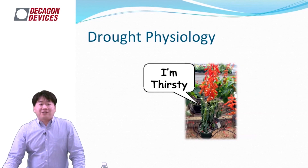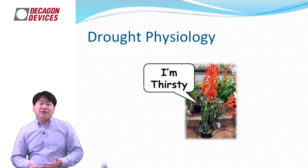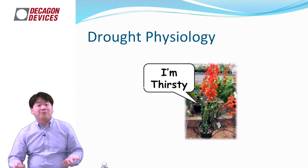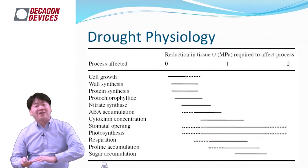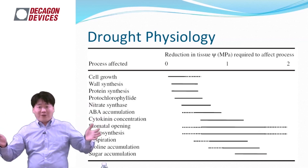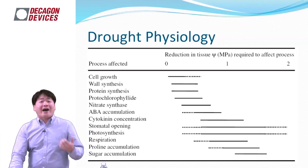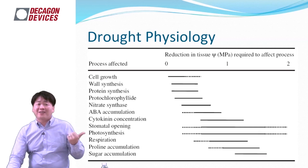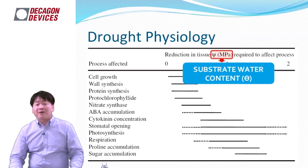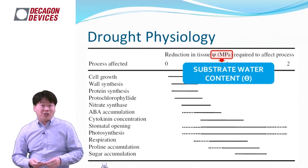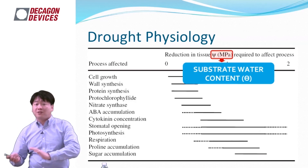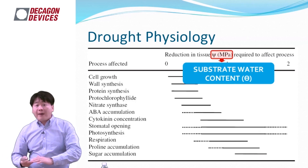For the drought study, plants feel thirsty whenever they have less water in the substrate. Many studies have been done on drought physiology, and this graph shows a good overview of it. The problem I had was that most work is based on water potential, which is hard to measure during plant growth. For horticulture, it may be much easier to use substrate water content sensors and understand what happens to the plant from there.